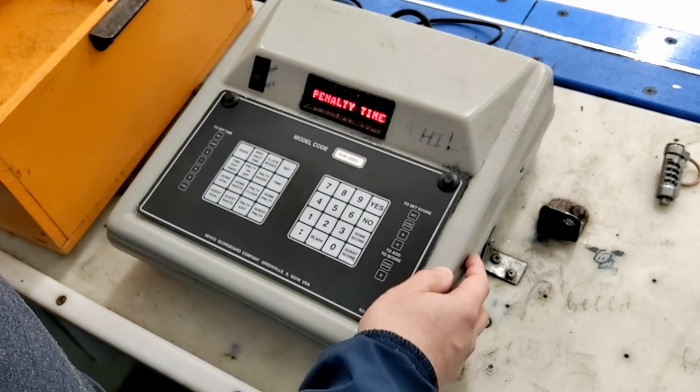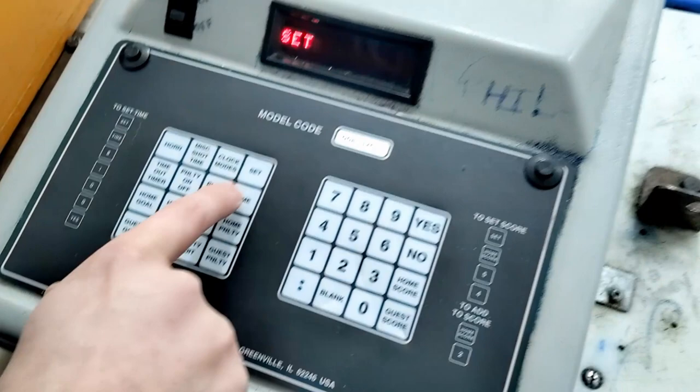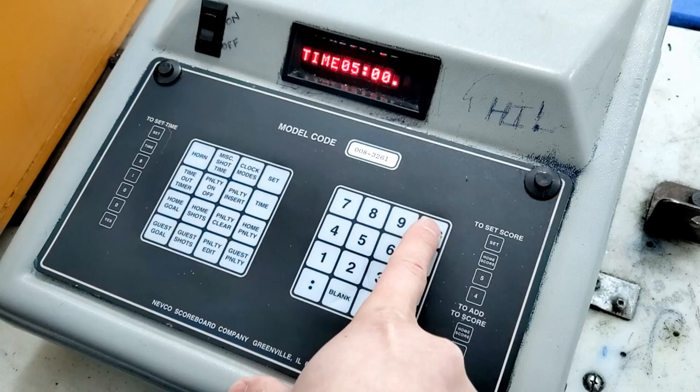Then you can set the time. Press set time, and let's say it was the warm-up, it would be five minutes. Press yes, period one, and you can see up on the score clock it'll be changed.